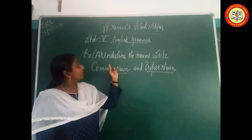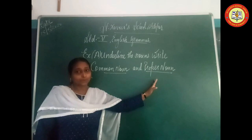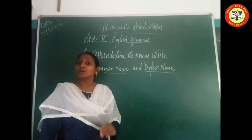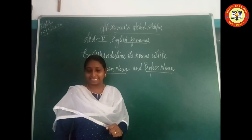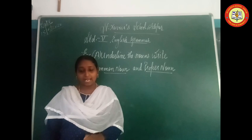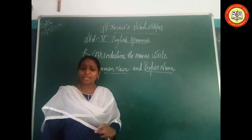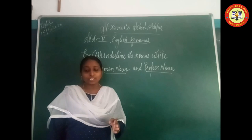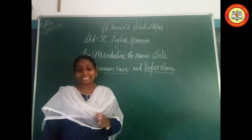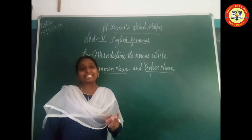Now I've explained Common Noun and Proper Noun. We'll go through each exercise. Exercise: underline the nouns and write whether it is a Common Noun or a Proper Noun. First: 'Munshi Premchand was a great writer.' Munshi Premchand is a Proper Noun and Writer is a Common Noun. Second: 'He wrote many books in Hindi.' Books is a Common Noun and Hindi is a Proper Noun. Third: 'One of his famous books is Godan.' Books is a Common Noun and Godan is a Proper Noun. Fourth: 'His books are generally set in villages of Northern India.' Books is a Common Noun and India is a Proper Noun.